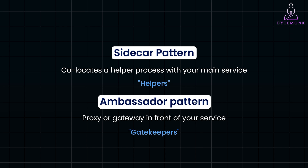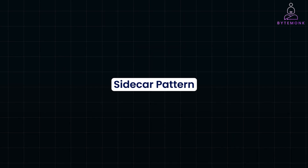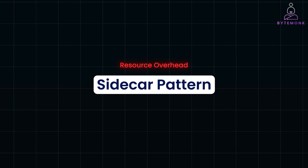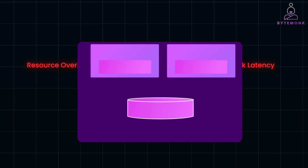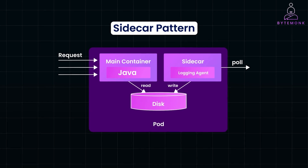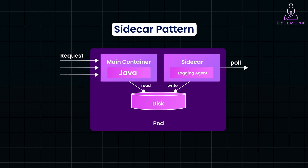While the sidecar pattern offers several advantages, it is not without its challenges. Running multiple sidecars increases resource consumption, which can be significant in large-scale deployments. It also requires managing and updating sidecars, which can add complexity. Furthermore, the extra communication hops between the main service and the sidecar can introduce latency. The sidecar pattern is a powerful solution for managing cross-cutting concerns in distributed systems. Whether you are dealing with service discovery, observability, security, or networking, sidecars provide a clean separation of responsibilities, allowing your main service to focus solely on business logic.